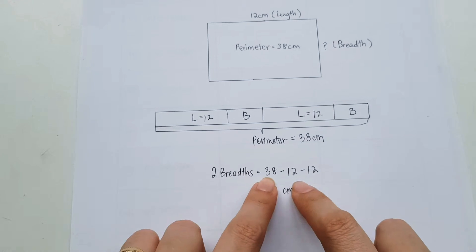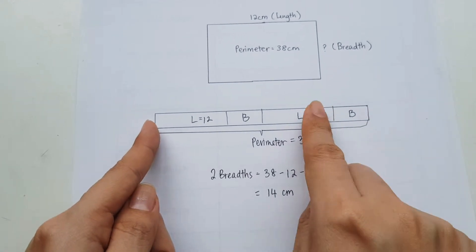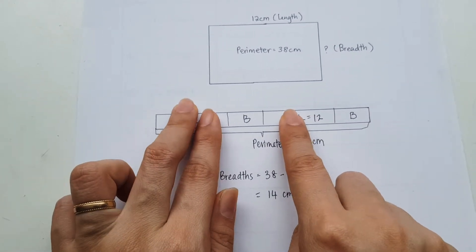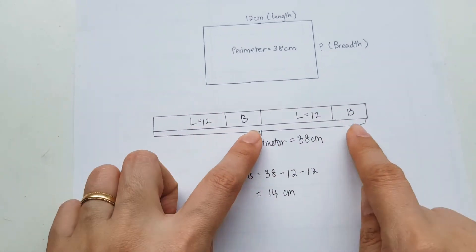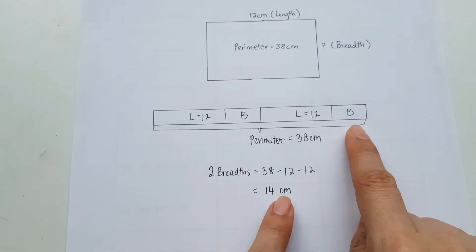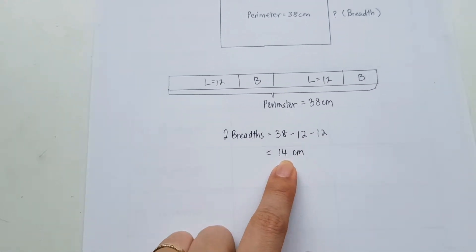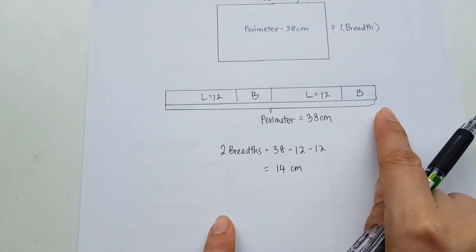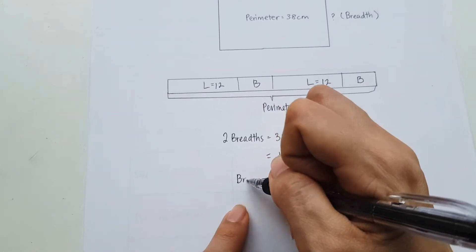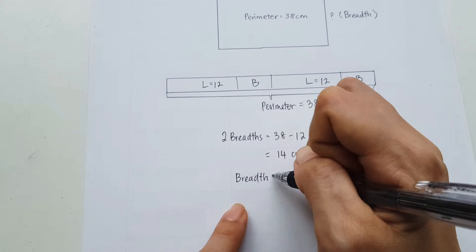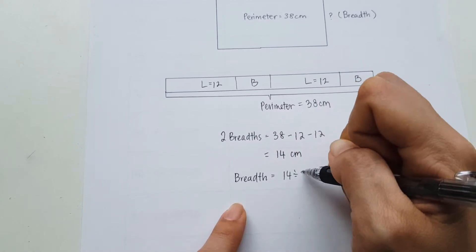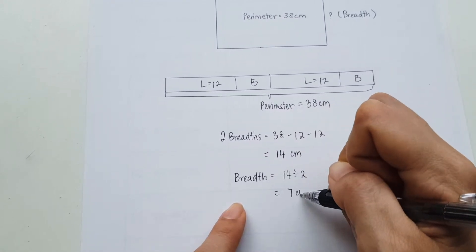So if you don't understand this, I have 38, the whole bar. And I'm going to take away this 12. And I'm going to take away this 12. And it's going to be left with 2 breadths. 2 breadths therefore equals 14. Now we know because the breadths are the same length, we can find out what 1 of it is by dividing it into 2. So 7 cm.